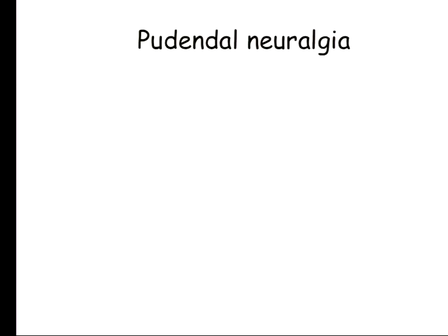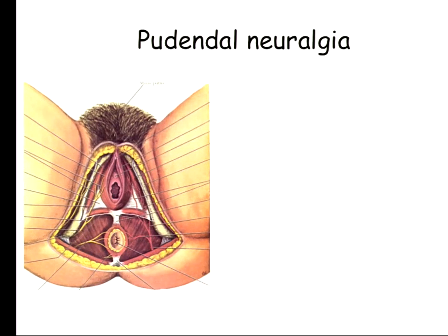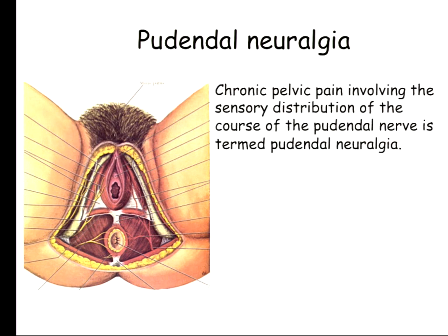The next topic is pudendal neuralgia. By definition, this is chronic pelvic pain involving the sensory distribution of the pudendal nerve - specifically within the diamond-shaped perineum between the anterior and posterior boundaries, bounded by the ischial tuberosities on either side, which is the area supplied by the pudendal nerve.